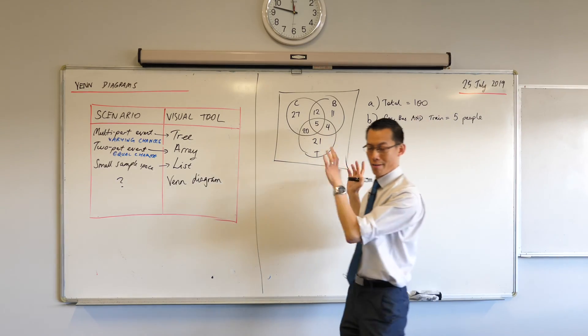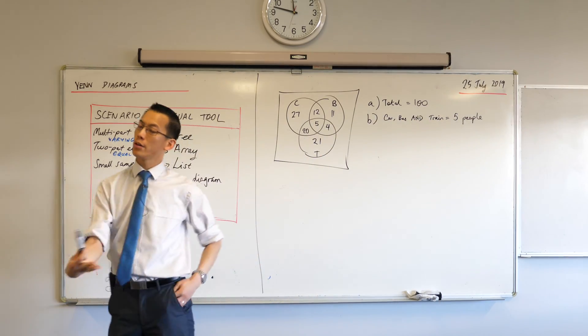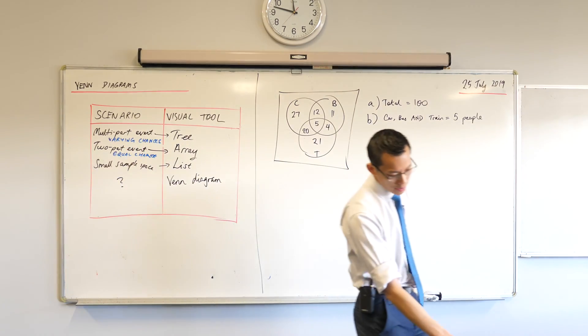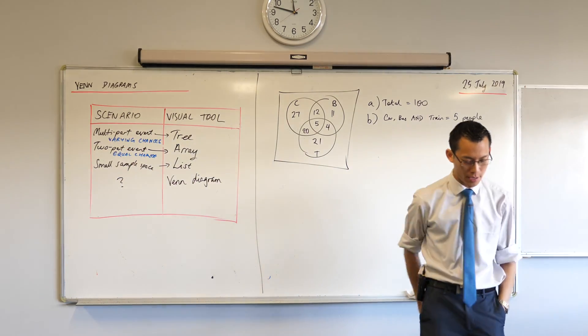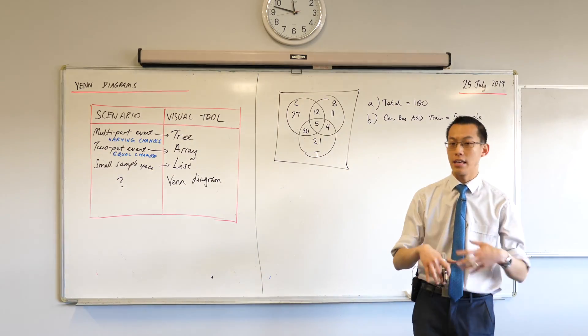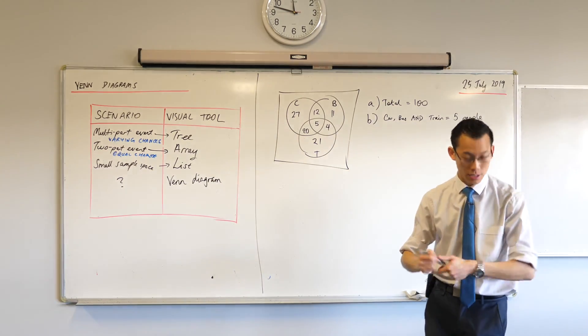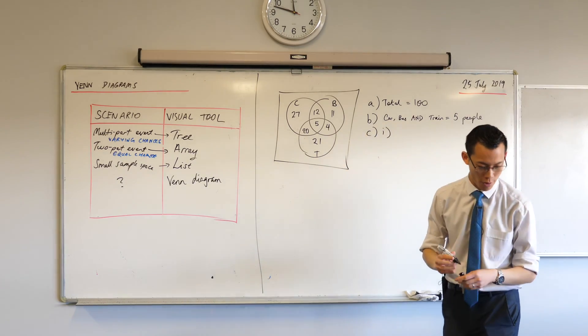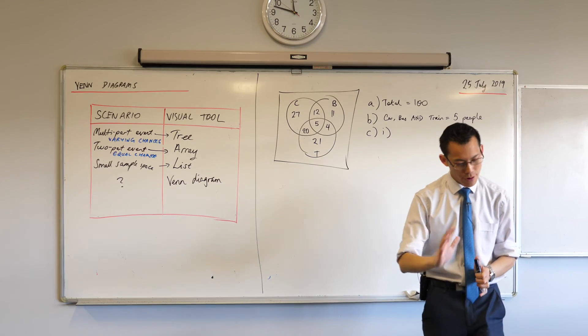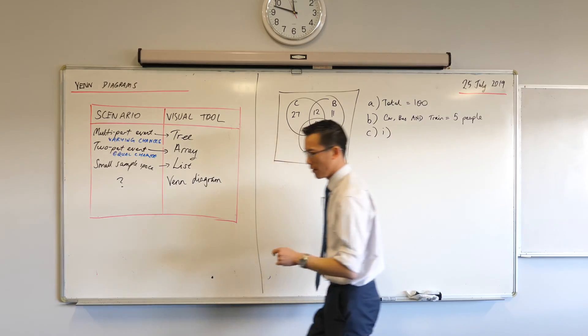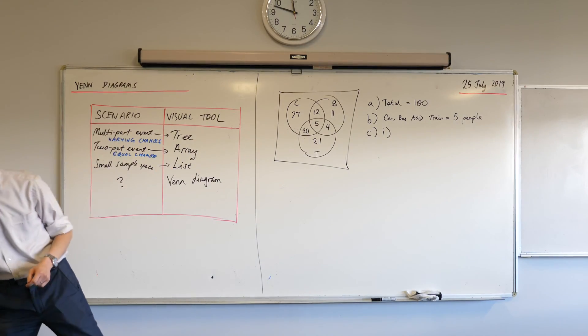Now we've got a handle on how the situation is going. Here's where the probability comes in. Calculate the probability of selecting a person from this survey who travels by a whole bunch of different scenarios. So let's just go through a couple, then I'll let you have a go at some point on your own. Part one says, car only, or bus only.